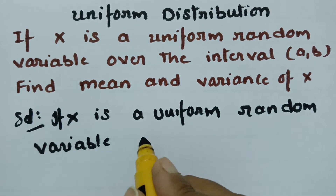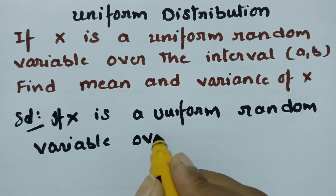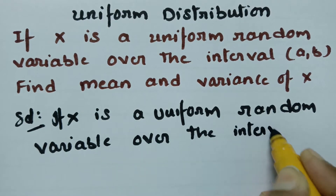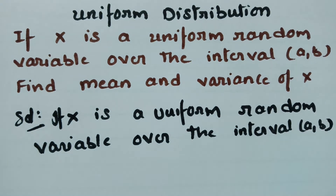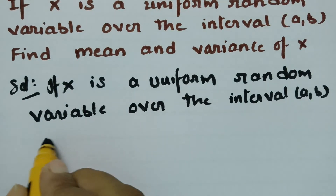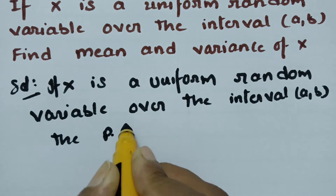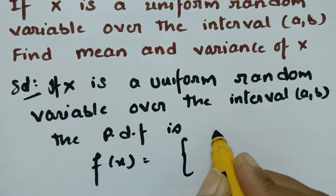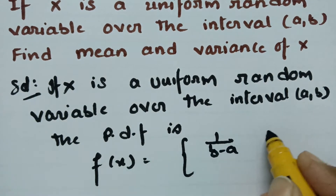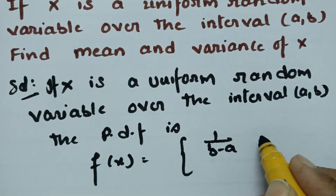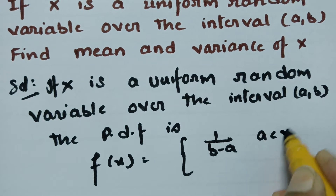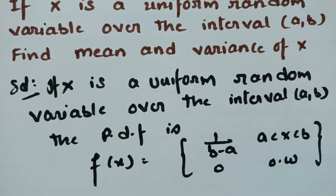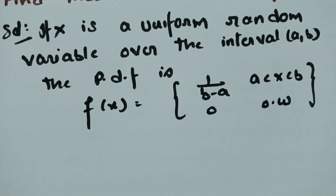If x is a uniform random variable over the interval (a, b), the probability density function is given as f(x) = 1/(b − a) where a < x < b, and 0 otherwise. This is the probability density function.